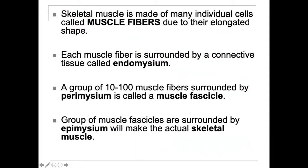Skeletal muscles are made up of individual cells called muscle fibers. Each muscle fiber is surrounded by the endomysium. A group of 10 to 100 muscle fibers surrounded by a perimysium is called a fascicle or muscle fascicle. Then a group of these muscle fascicles surrounded by the epimysium makes up the skeletal muscle, which has a continuum called the fascia and tendon.